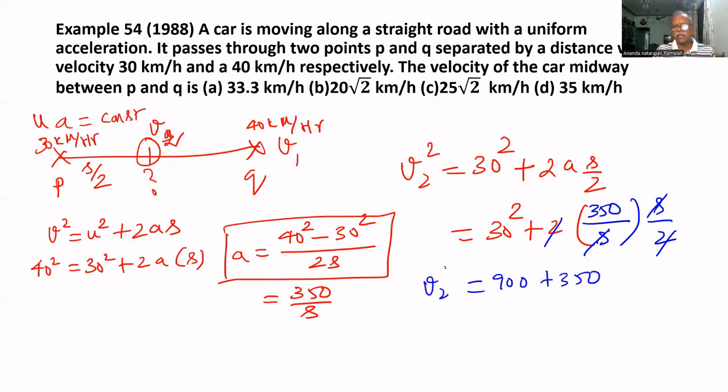That is V2 square. In the midway, the speed is V2 square is 1250. 1250 can be written as 25 root 2. Therefore, C is the answer. That is equal to 25 root 2.